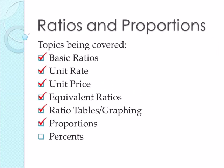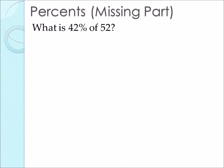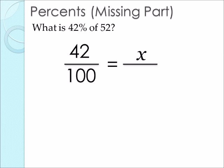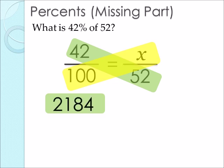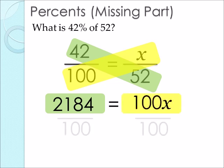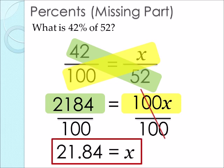This covers our topic of proportions. Next we will be talking about percents, which focuses on the missing part. In this problem it's asking: what is 42% of 52? We set this up as a proportion. The percent always goes over 100, set equal to our 'is' over our 'of.' We don't know the 'is' or part, but we know the whole is 52. Using cross multiplication: 42 times 52 gives us 2184, equal to 100x. Dividing both sides by 100, the 100s cancel out, and 2184 divided by 100 gives us 21.84, so x equals 21.84.